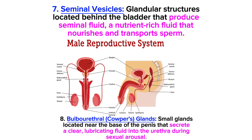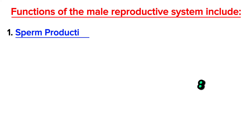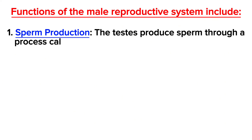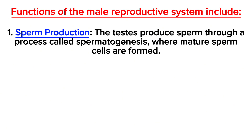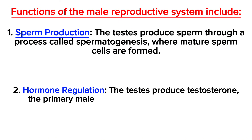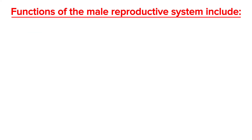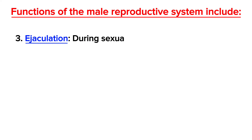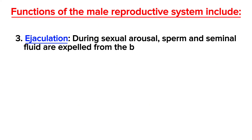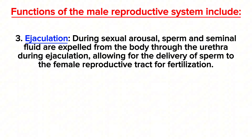Now let's move to the functions of the male reproductive system as a whole. First is sperm production — the testes produce sperm through a process called spermatogenesis, where mature sperm cells are formed. Second is hormone regulation — the testes produce testosterone, the primary male sex hormone responsible for the development of secondary sexual characteristics and regulating sperm production. Third is ejaculation — during sexual arousal, sperm and seminal fluid are expelled from the body through the urethra, allowing for the delivery of sperm to the female reproductive tract for fertilization.